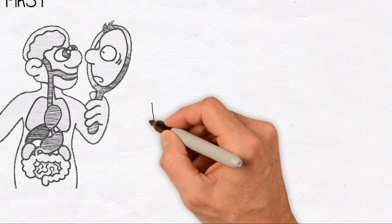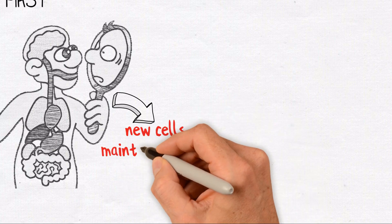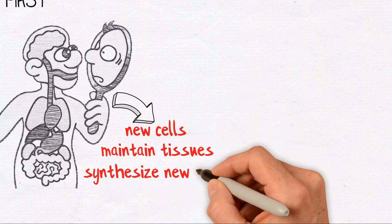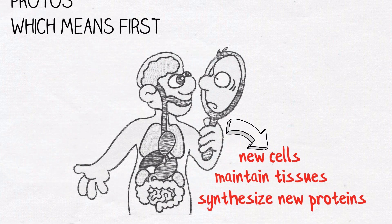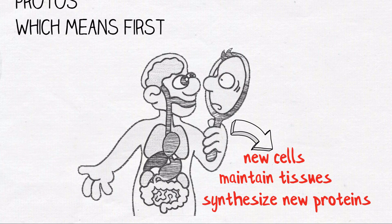Your body uses proteins in your diet to build new cells, maintain tissues, and synthesize new proteins that make it possible for you to perform basic bodily functions.